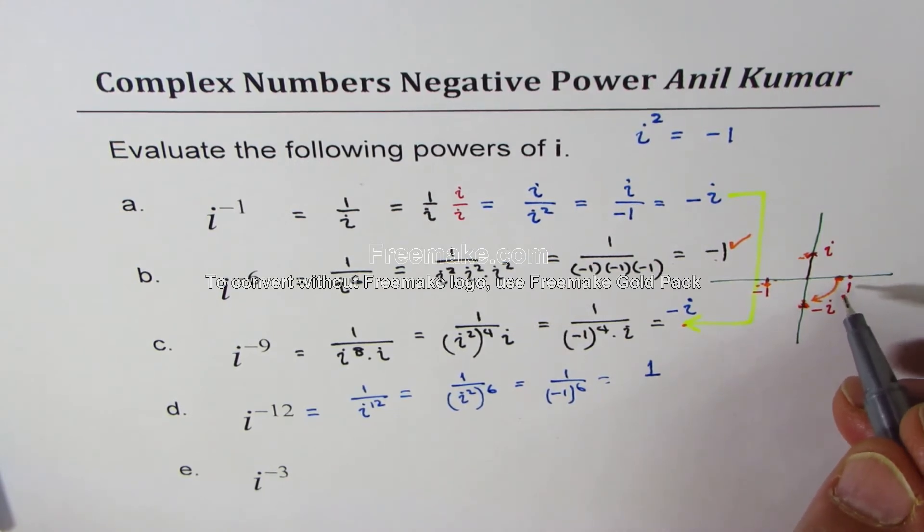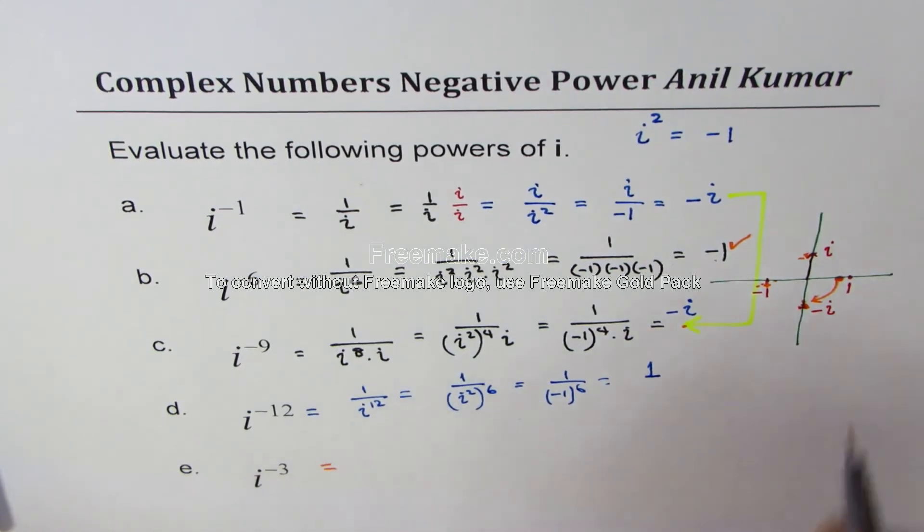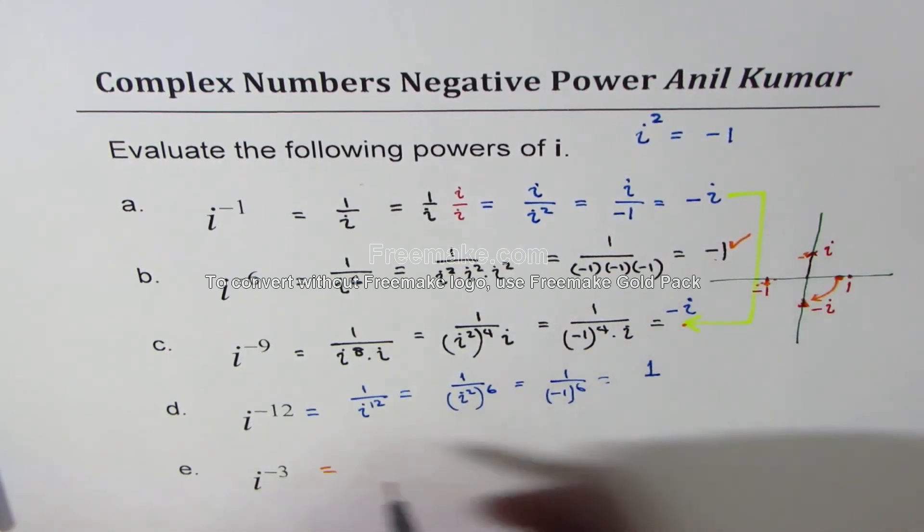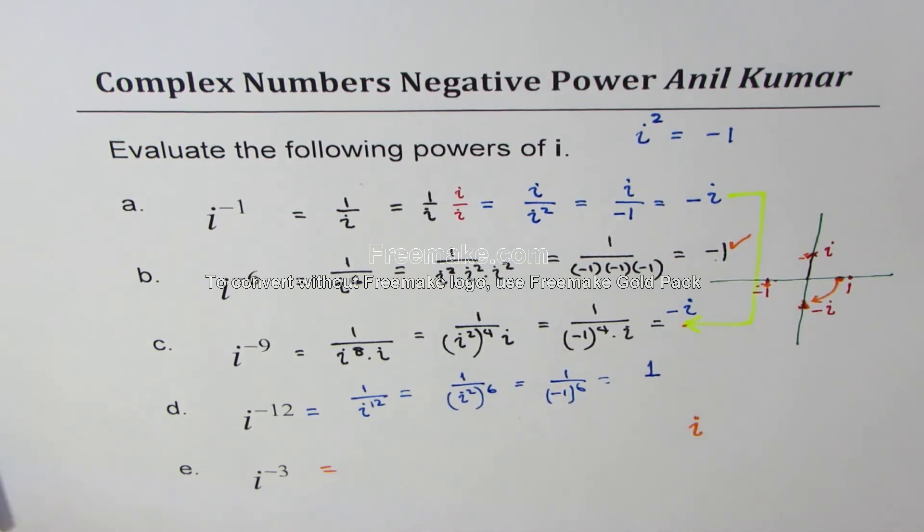So similarly, what should be the result for i to the power of minus 3? 1, 2, 3, we expect i as our answer. Is it okay? Now let us check it out.